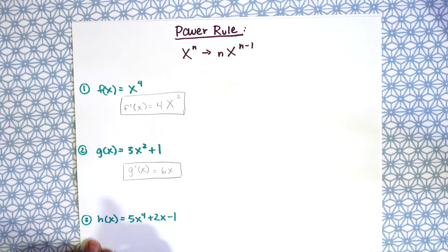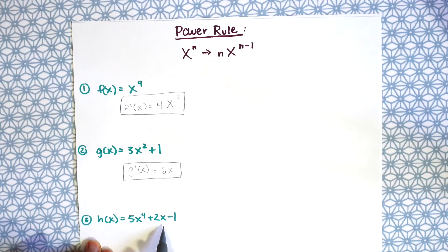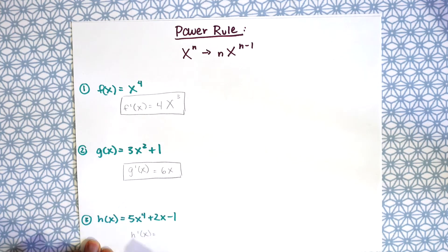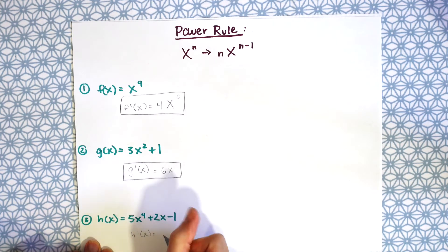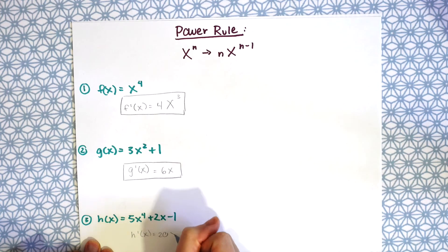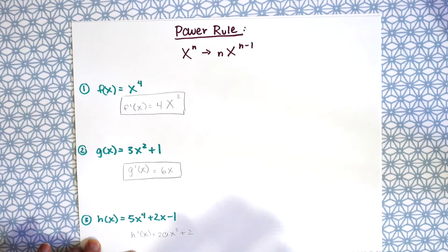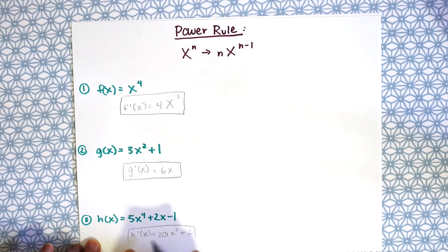The last power rule example: h of x equals 5x to the fourth plus 2x minus 1. Applying the power rule, h prime of x equals 20x cubed plus 2. Remember, the constant term minus 1 just zeros out, so this is our final answer.